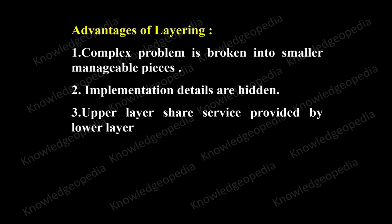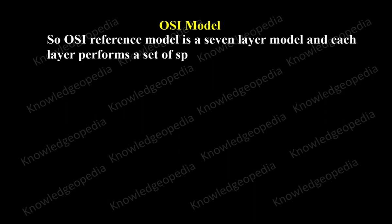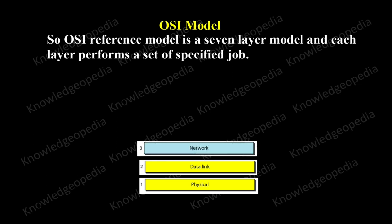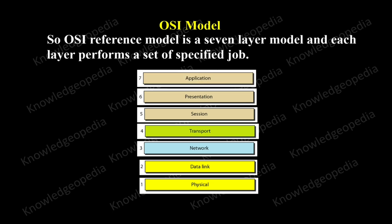So you understood what is the meaning of the layering concept. Similarly, in the OSI reference model there are seven layers, each having some specific functions. What are those layers? Physical layer, data link layer, network layer, transport layer, session layer, presentation layer, and application layer. These are the seven layers using which transfer of data from one computer to the other computer across the internet can take place, and each layer has to do a specific job.